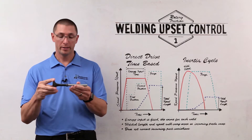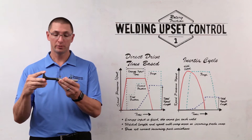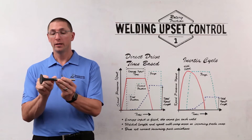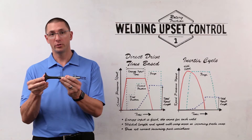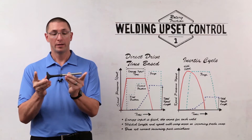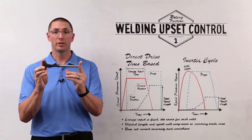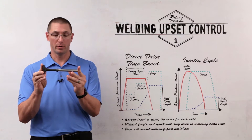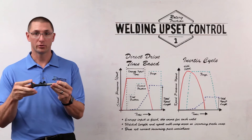In friction welding, the amount of upset that you get as a result of welding is a measurement of how much shorter the two incoming parts get. The overall length is a measurement of the length of the part, but upset is the amount of shortening.